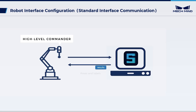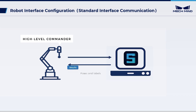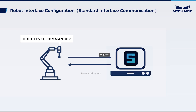Now we have successfully established communication between the vision system and the robot, and the robot can proceed to request visual results from the system. For the next step, configuring the vision system, you can check out the guidance in the docs and tutorials linked in the video description below to learn more.